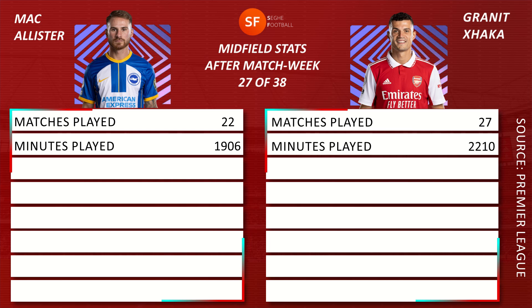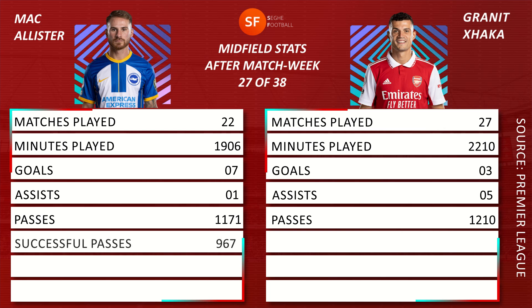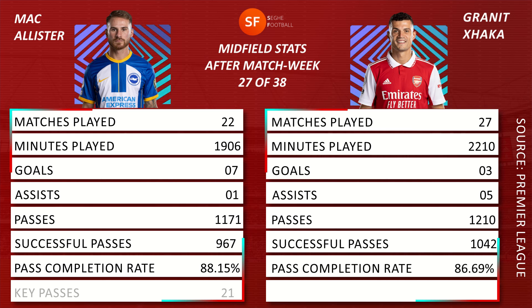Xhaka minutes played: 2210. McAllister goals: 7, Xhaka goals: 3. McAllister assists: 1, Xhaka: 5. McAllister passes: 1171, Xhaka: 1210. McAllister successful passes: 967, Xhaka: 1042. McAllister pass completion rate: 88.15%, Xhaka: 86.69%. McAllister key passes: 21, Xhaka key passes: 38.